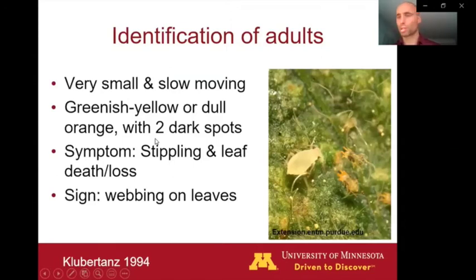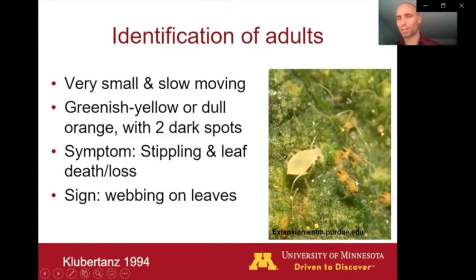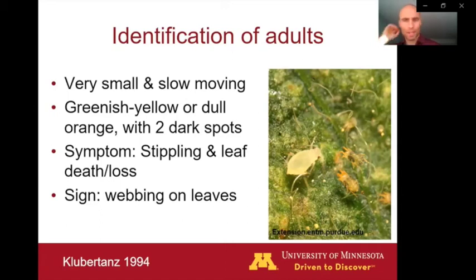These are very small, slow-moving organisms. In the picture on this slide, we see a baby soybean aphid — a soybean aphid nymph — and next to that, we see a few two-spotted spider mites, and these spider mites are even smaller than the soybean aphid nymph. Like I mentioned, they've got the two spots, kind of greenish yellow to dull orange in color. The symptoms are what you're most likely to see on the plants — the mites themselves are so small, you probably won't see them. So what we're going to be seeing when we're scouting our field is probably the symptoms and the signs.